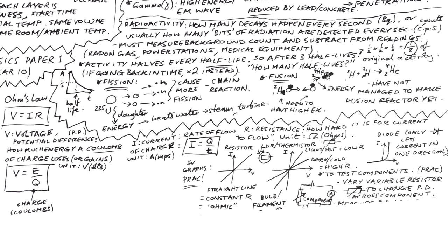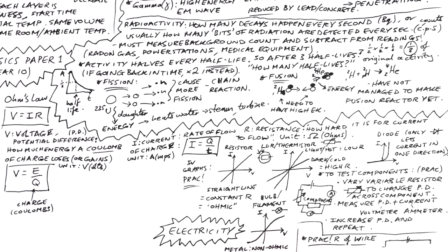A diode is very unlikely that this will come up, but it's possible. It's a component that only lets current flow in one direction. So we can see that on the left hand side for a negative PD, we have zero current, but all of a sudden we have a massive current once we go past a certain voltage in the right direction. A bulb or a lamp or a filament, it's just a piece of metal, really. It's definitely non-ohmic. Resistance does not stay the same. And we can see that from the graph. As we reach higher PDs, the current can't flow as easily. That's because the resistance is increasing. And we'll talk about why in a second.